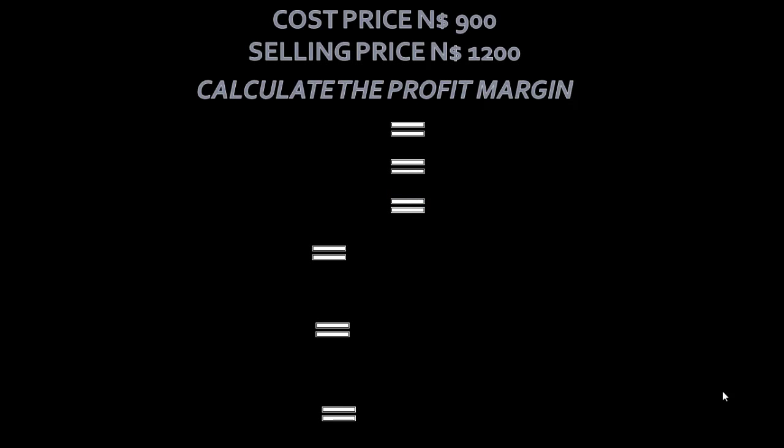Now let's look at our first example. Our first example reads that a product's cost price is $900 and the selling price is $1,200. Calculate the Profit Margin. Before we can calculate the Profit Margin, we need to calculate the Profit first.